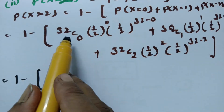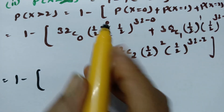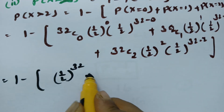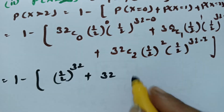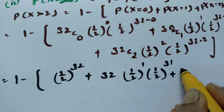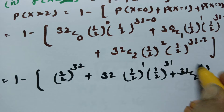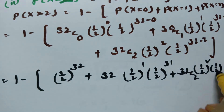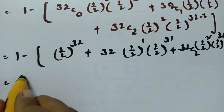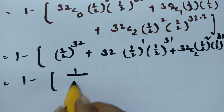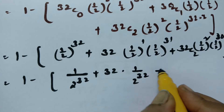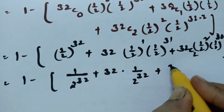Computing each term: 32C0 equals 1 and (1/2)^0 equals 1, giving 1 divided by 2^32. For x=1: 32 times (1/2)^32, giving 32 divided by 2^32. For x=2: 32C2 equals 496, giving 496 divided by 2^32.